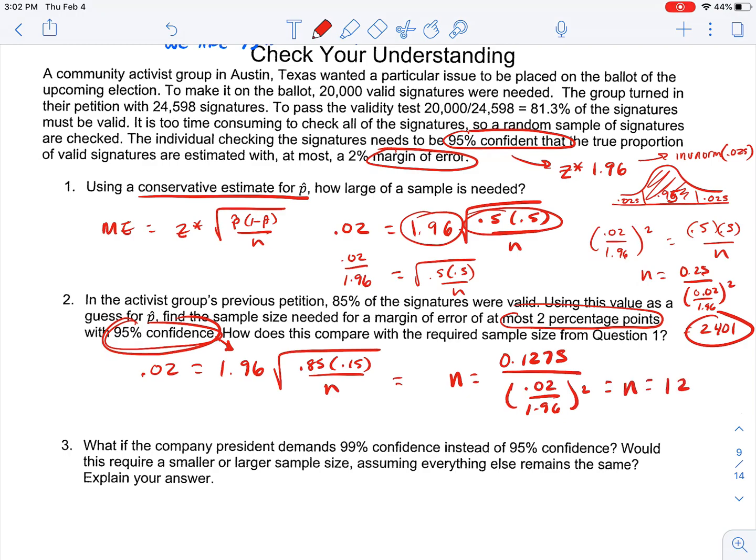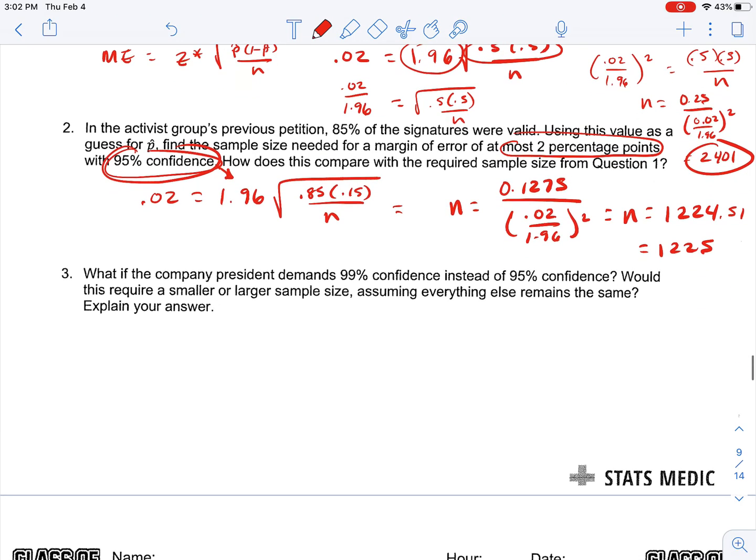And if we kind of extrapolate what's going on here, we'd end up with n is equal to 0.1275, which would be that .85 times .15, divided by .02 over 1.96 squared, to give us an n equal to 1224.51, or n is equal to 1225. How does it compare? It's smaller. So the sample size is much smaller, so we don't need as big a sample size when we have an estimate that is more accurate.